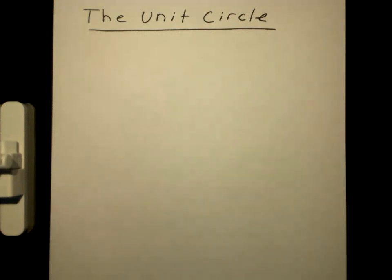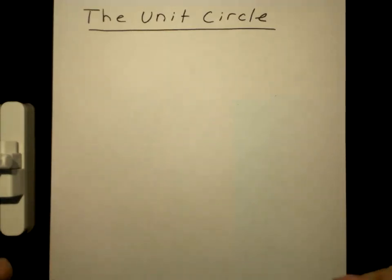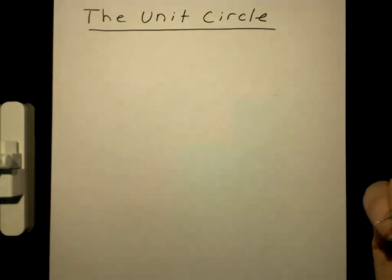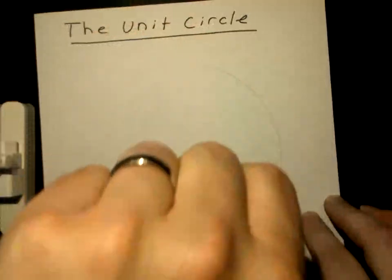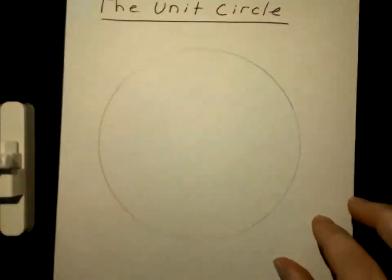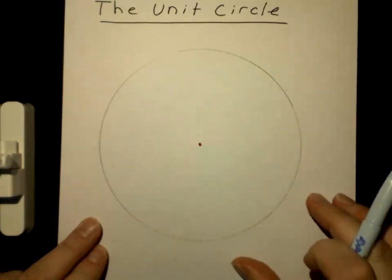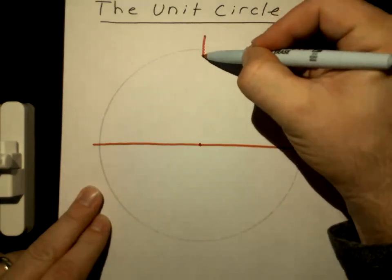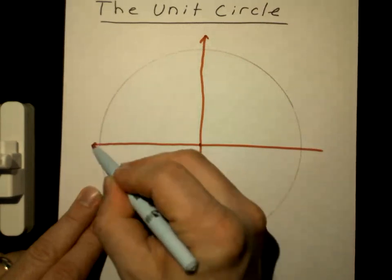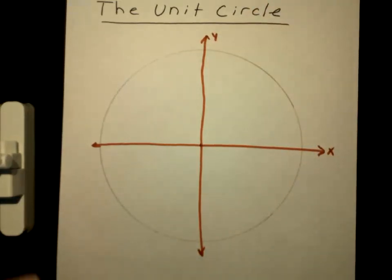The unit circle is a big concept when you're dealing with trigonometry. The first thing we're going to do is develop this unit circle so you can remember it and memorize it. Draw a circle — if you have a compass it might help. Draw a circle with a center, and place it on an x and y axis like that.